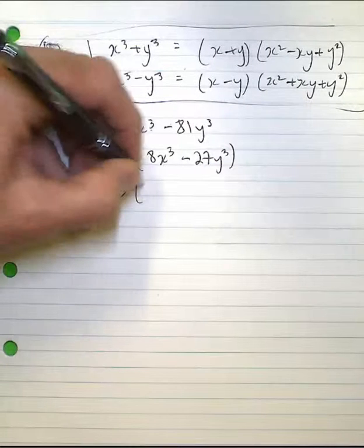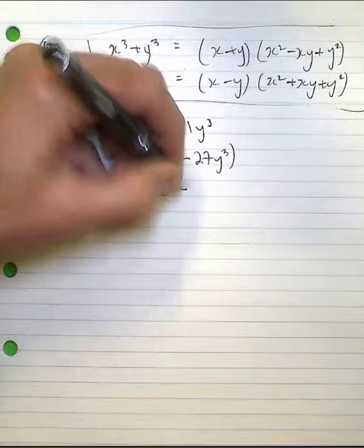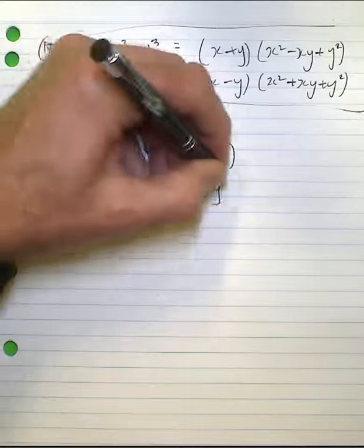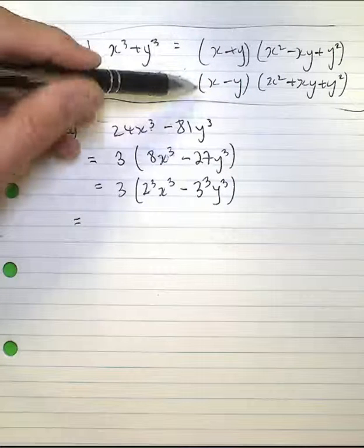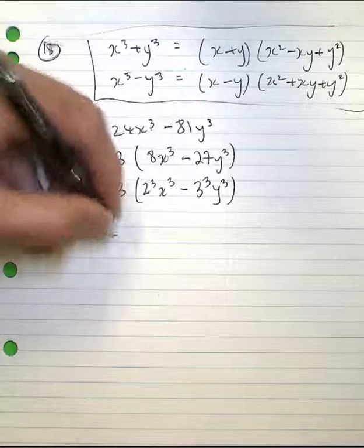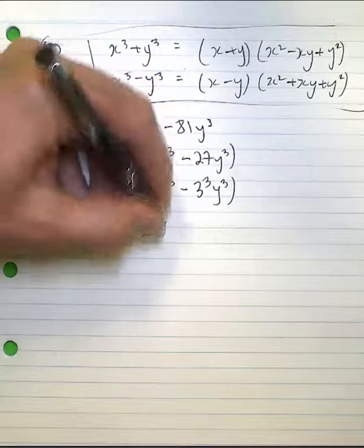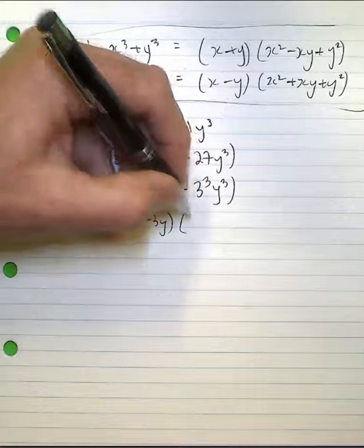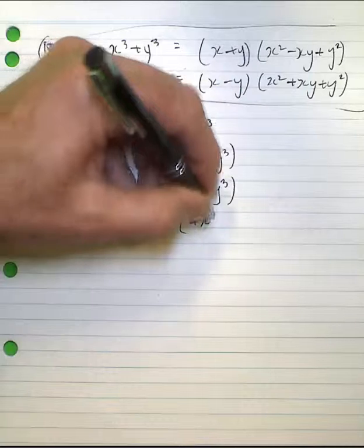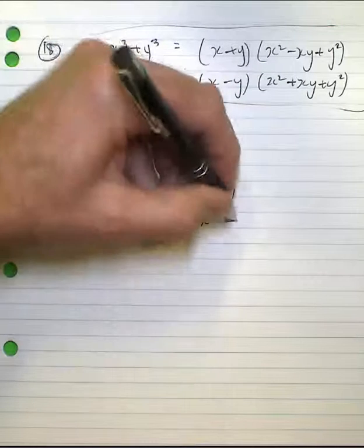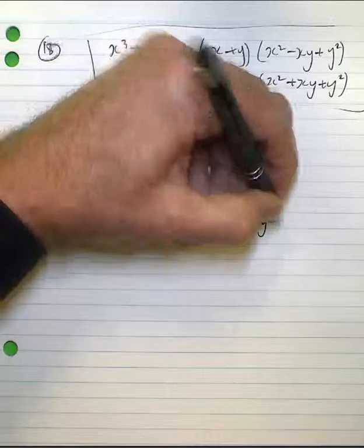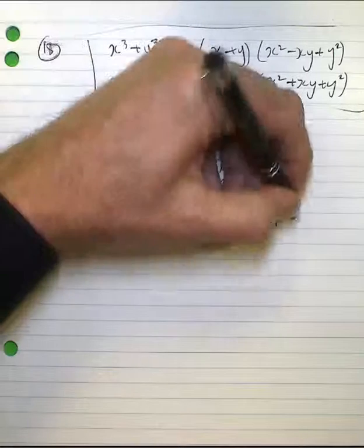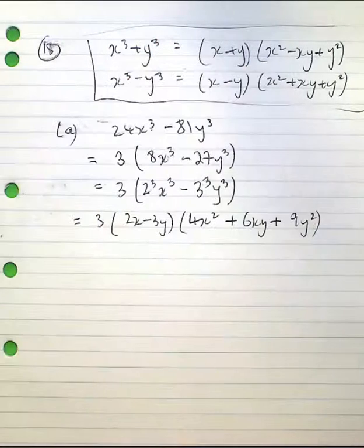Now that's two cubed x cubed and three cubed y cubed. I can then go and make use of the difference of two cubes. That's my final answer.